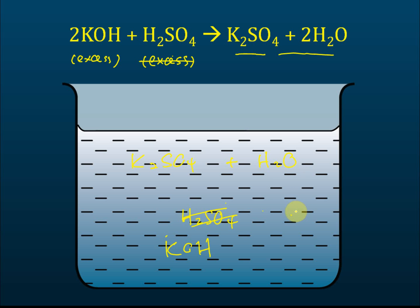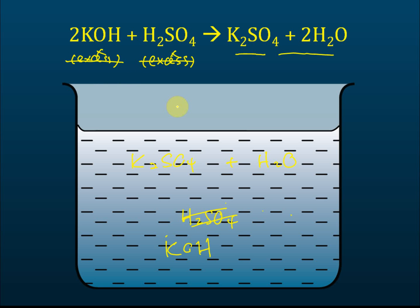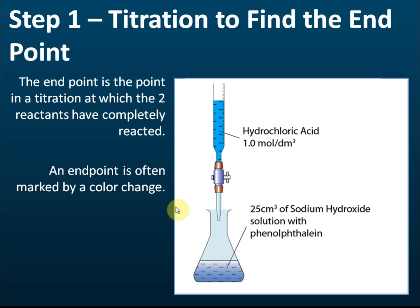Similarly, if we have excess potassium hydroxide, then potassium hydroxide exists as an impurity in the products, and it is very hard to remove it from the solution. Therefore, we cannot have excess sulfuric acid and we cannot have excess potassium hydroxide. To control this, the method we use is called titration — to ensure there is no excess acid and no excess alkali in our products.